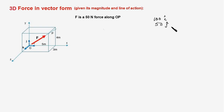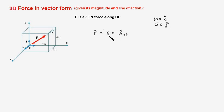Now we want to learn how to represent a force F which is of 50 newtons magnitude and is along a line OP. Based on this pattern we could say that F is 50 times lambda-hat_OP, where 50 represents the magnitude of this force F and lambda_OP is a unit vector along the line OP. This takes care of the magnitude, and the unit vector takes care of the direction.